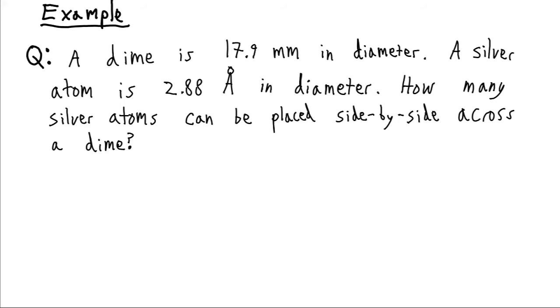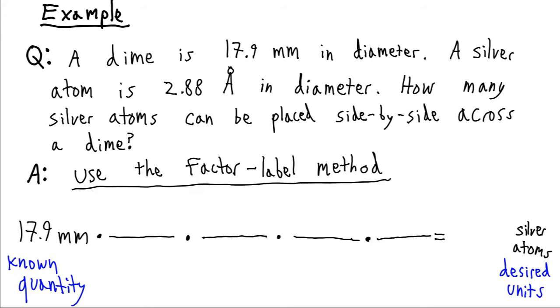Well since we are using our units here to solve the problem, we probably want to employ the factor label method. So factor label method, remember we start by writing down our known quantity. So that's 17.9 millimeters, that's the number that could change if we had a nickel or a penny.